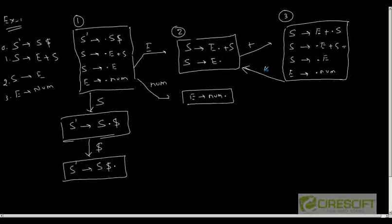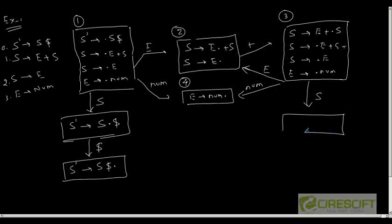From state 3, processing terminal num leads to state 4. On processing non-terminal S from state 3, we reach state 5 containing S equals E-plus-S-dot. So the states are: state 5, state 6, and state 7. This completes the DFA which we have created for the given grammar.